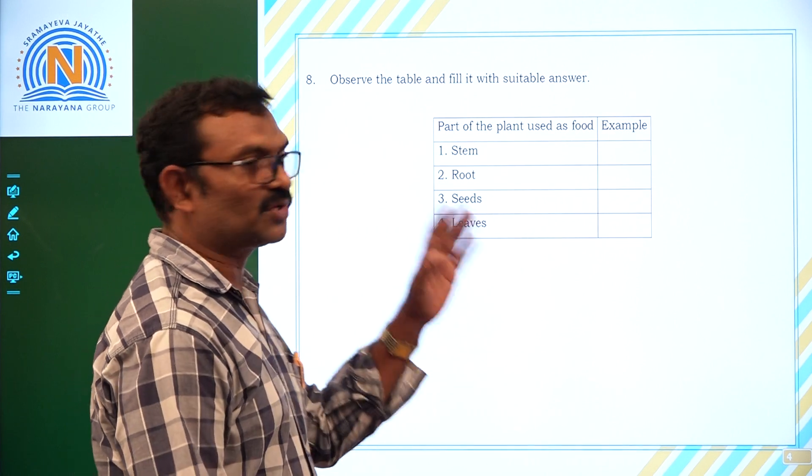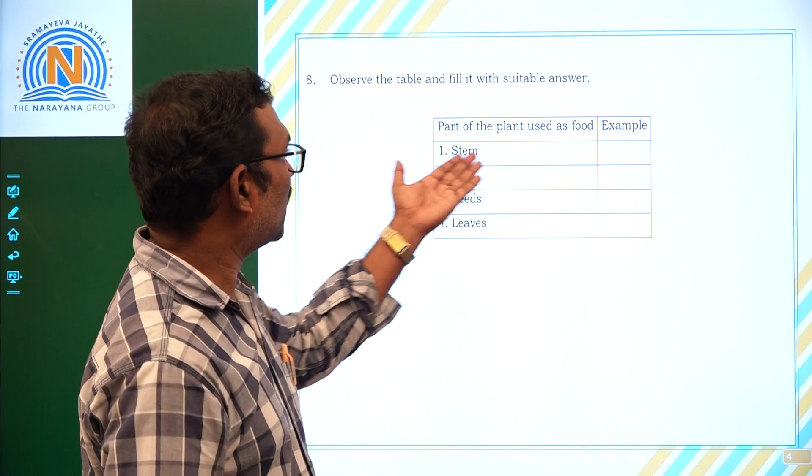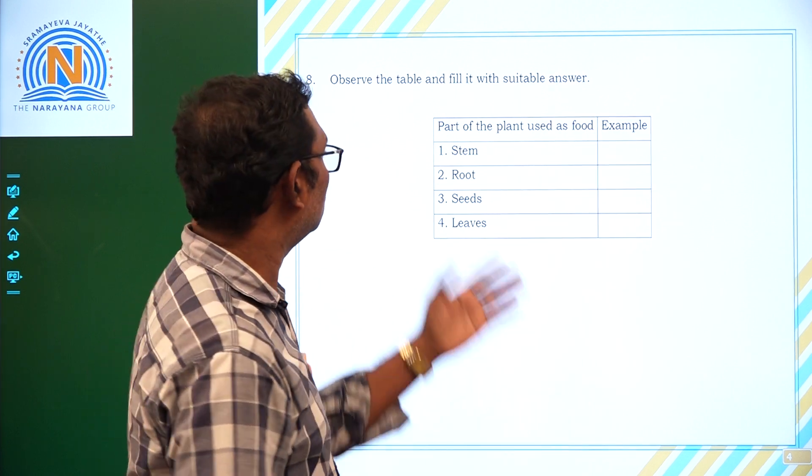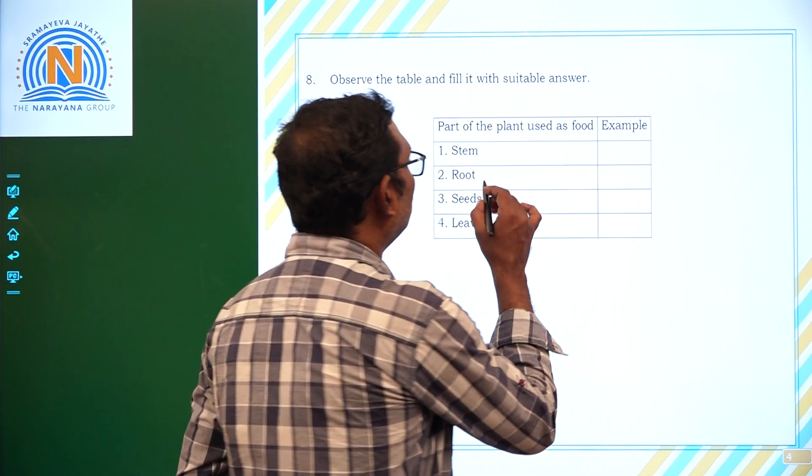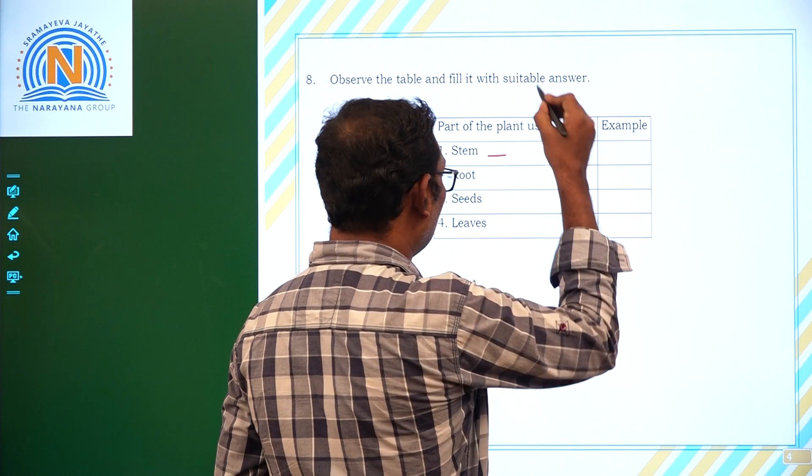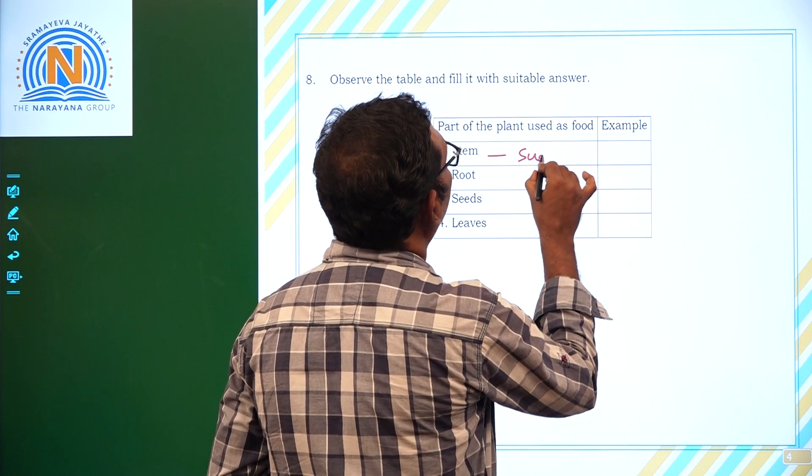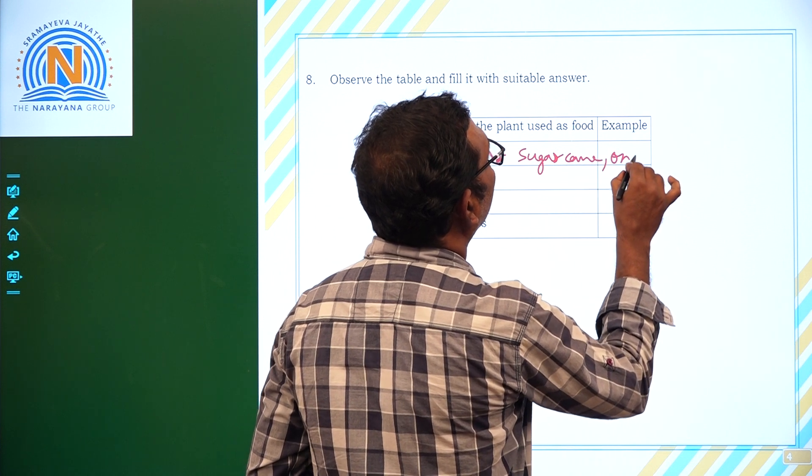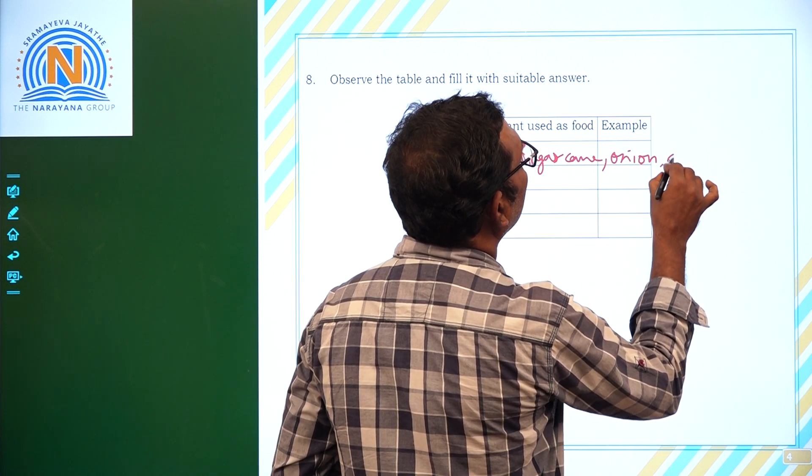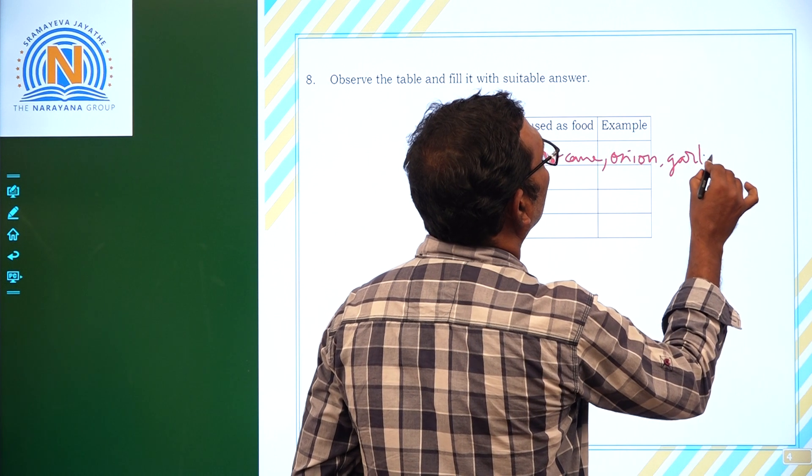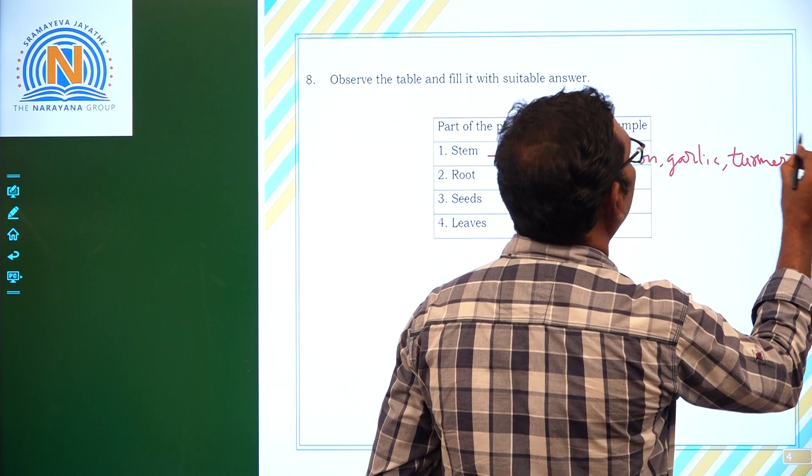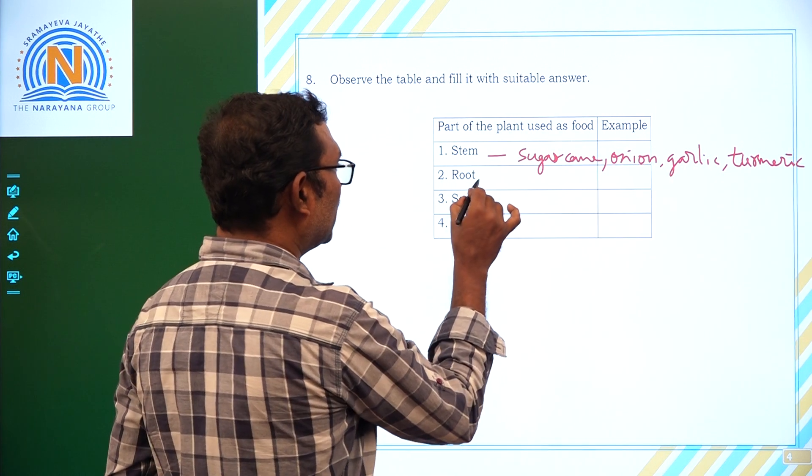Observe the table and fill it with suitable answers. Now part of the plant used as food once is given and we have to write examples. Stem, yes, example. What kind of food? Just before we have seen that sugarcane, onion, garlic, turmeric. So these are all different types of stem foods.